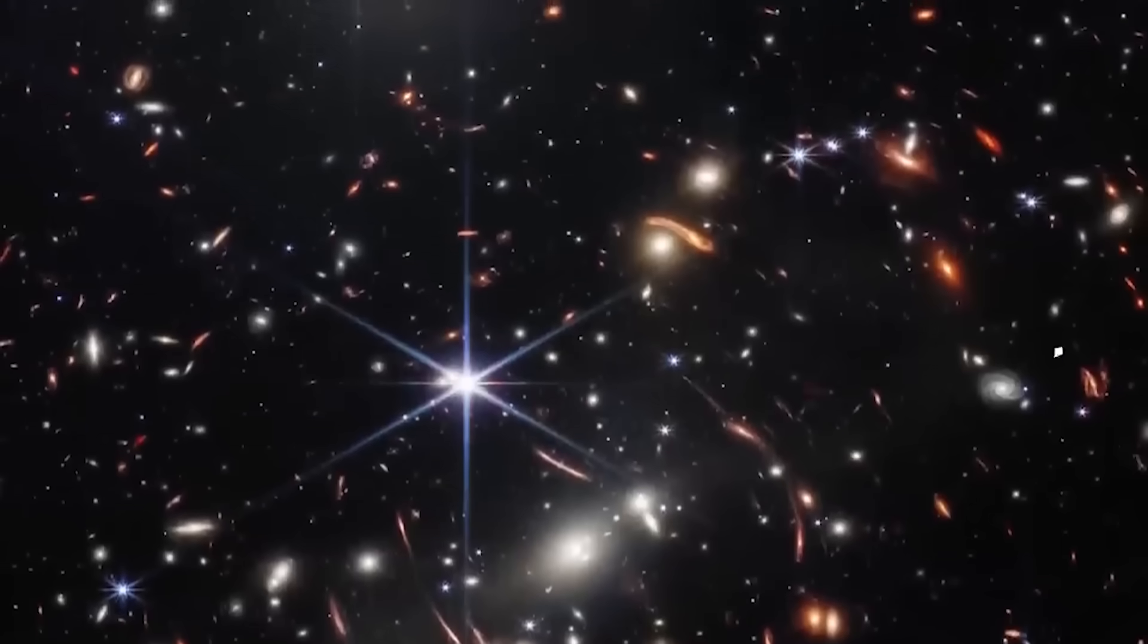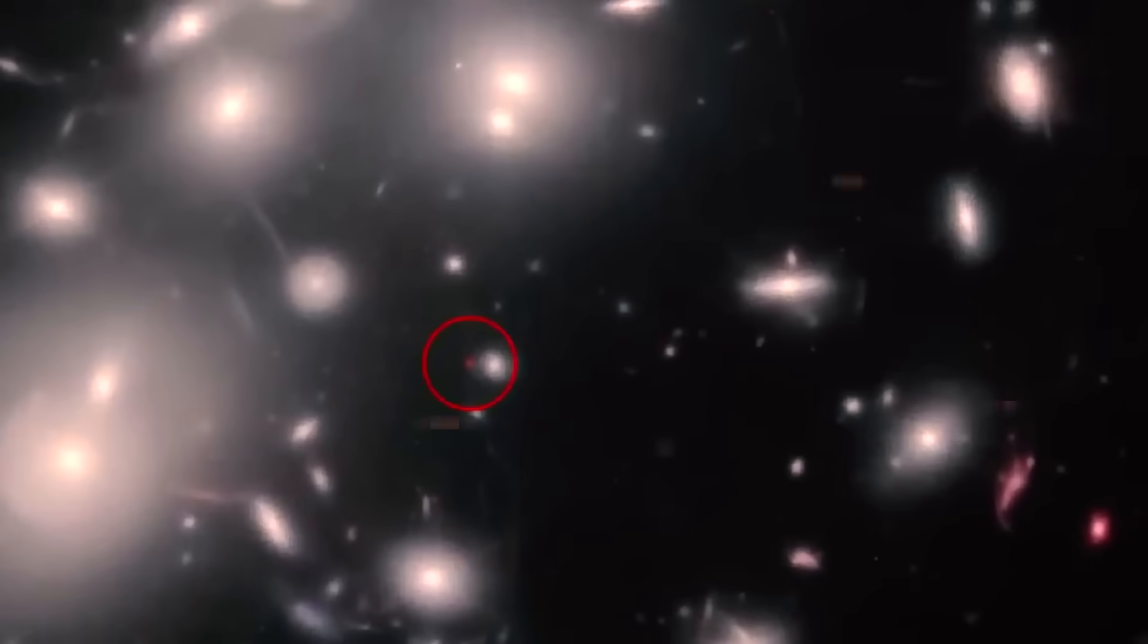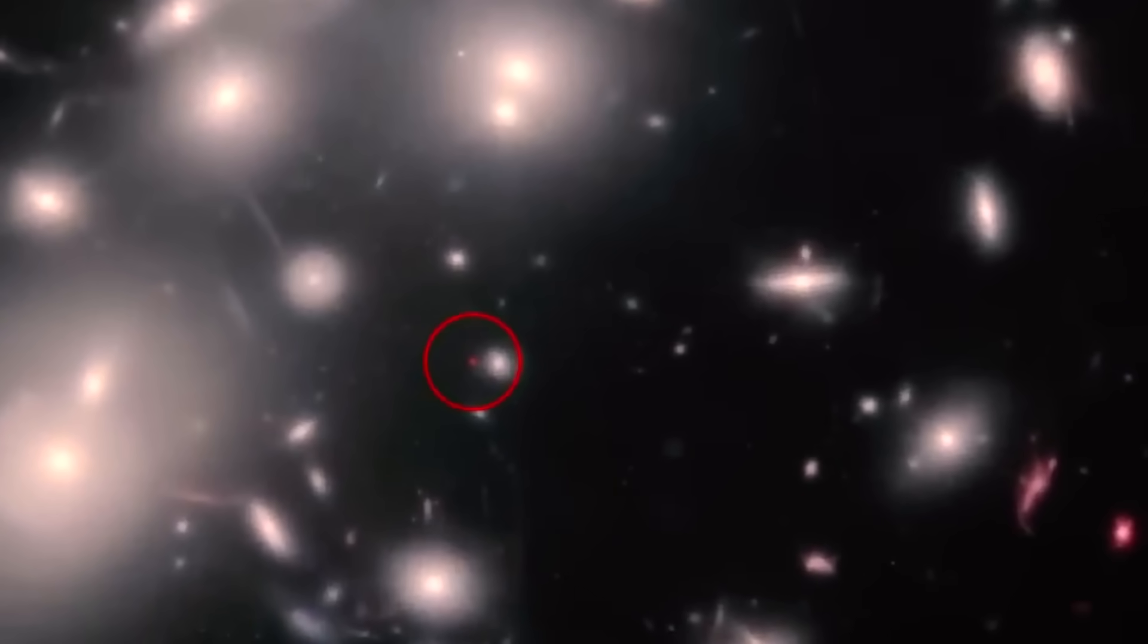Faint sources are important because the Webb telescope captures less light from distant objects, causing them to appear faint and red in its images. While looking for faint sources, the team stumbled upon an extremely red object that previous surveys couldn't detect. Scientists believe this object could be one of the most distant ever found.